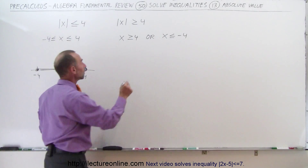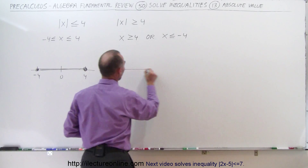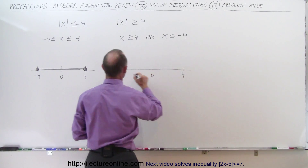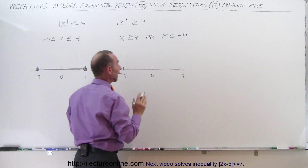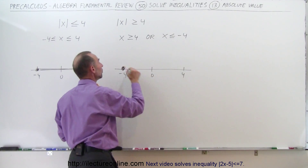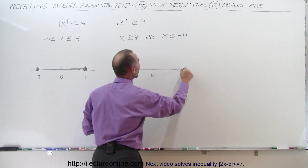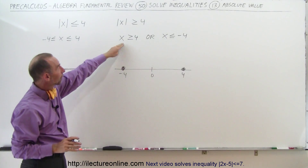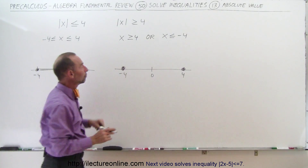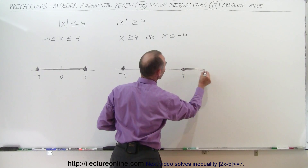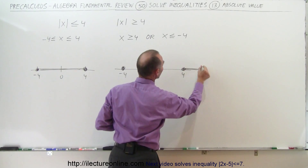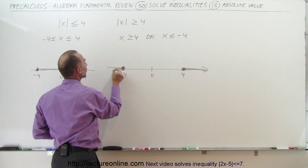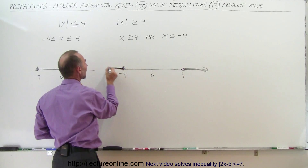In that case, we do the same thing. We draw the number line. Here's the number 0, here's the number 4, here's the number negative 4. Again, we do include the endpoints because the equal sign is right there, but in this case we only want the values that are bigger or equal to 4, which is everything to the right of 4, and we're looking for the values that are smaller than negative 4, which means everything to the left of negative 4.